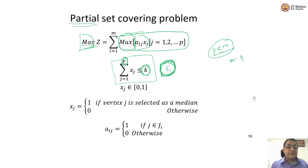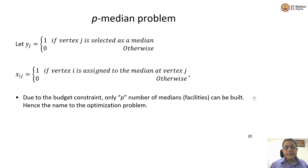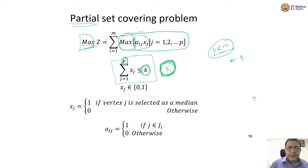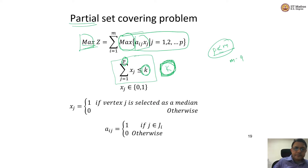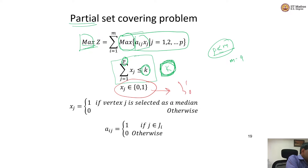Now, let us look at a variant of this partial set covering problem. That variant is called the p-median problem. In a p-median problem, there are two decision variables. Here, there was only one decision variable, xj — I was trying to decide whether to have the facility at j or not. This was a binary variable, and there were nine such variables, or p such variables, depending on how many facilities are possible.